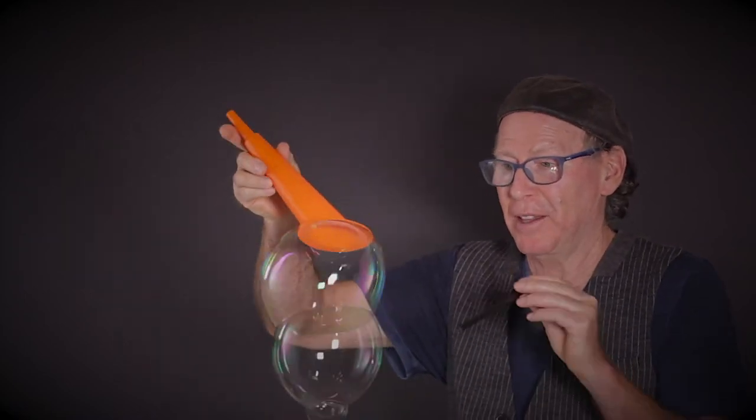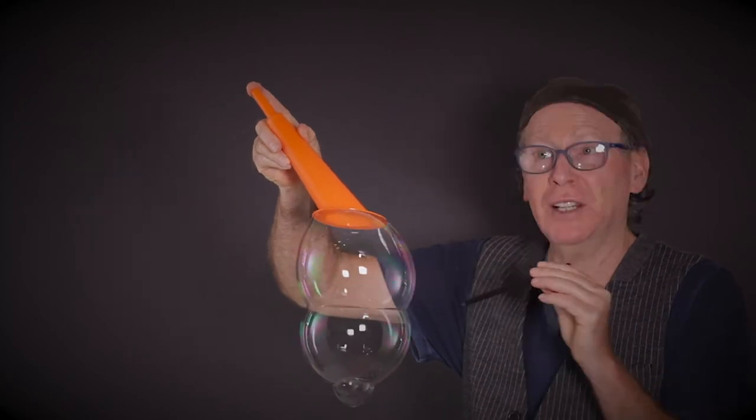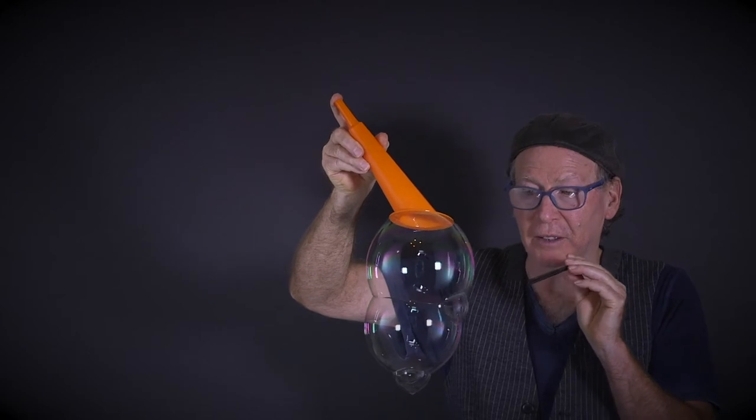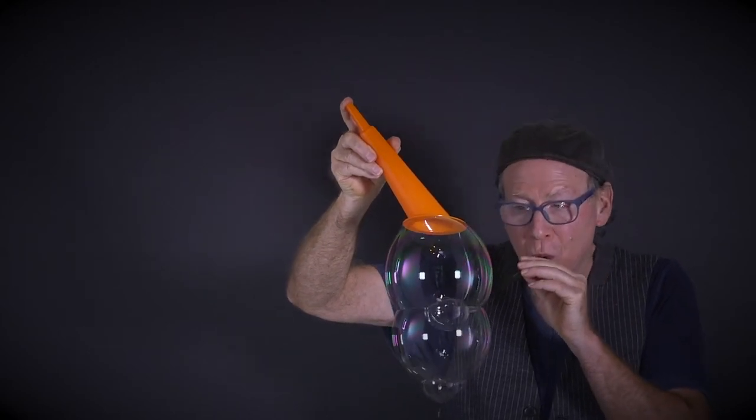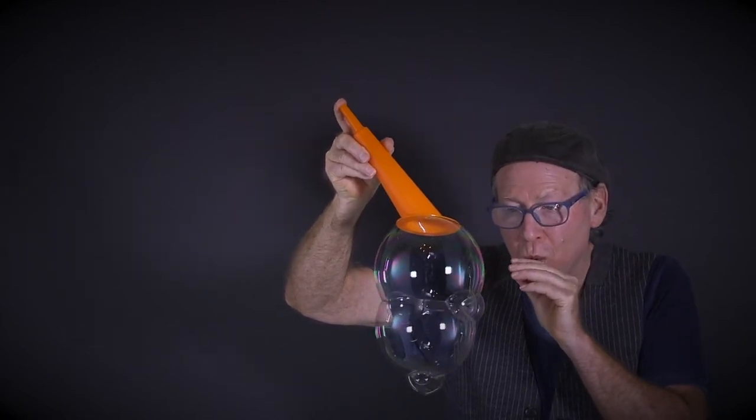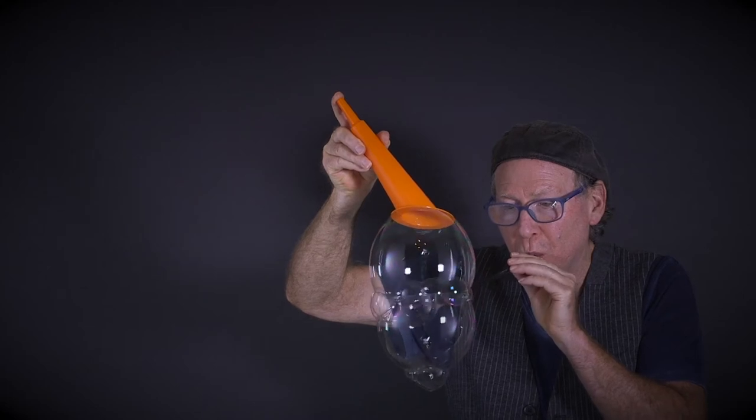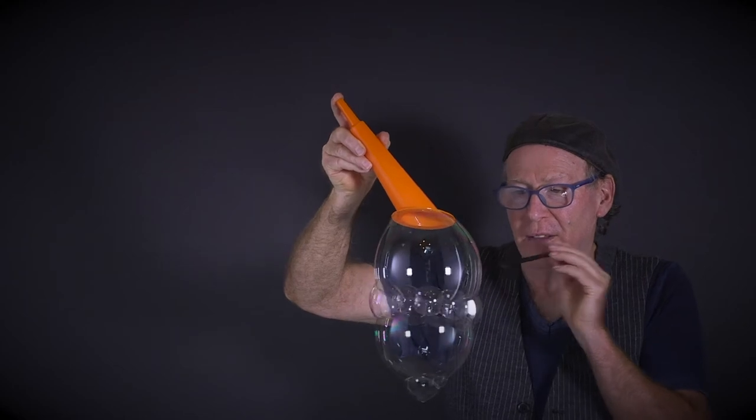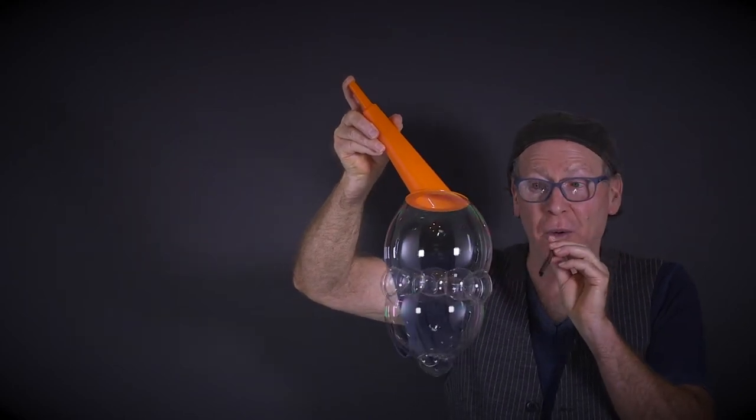You make a second bubble. Then you take your straw right to the intersection of the two bubbles. Make a little bubble like that, about that size, and go all the way around. Then you can spin it right then, you don't need to do anything else.